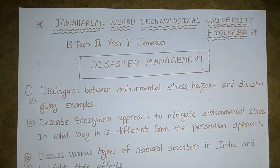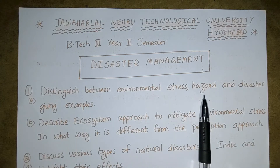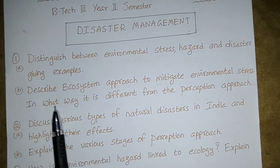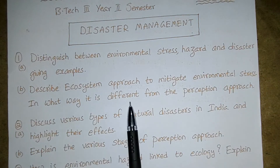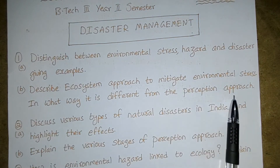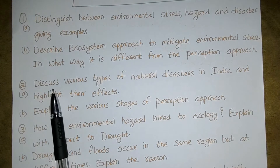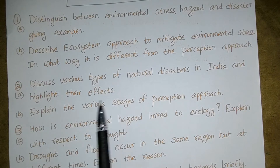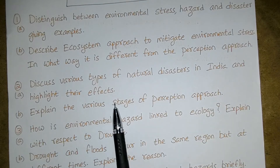First question: Distinguish between environmental stress, hazard, and disaster, giving examples. Second question (a): Describe the ecosystem approach to mitigate environmental stress — in what way is it different from the perception approach? Second question (b): Discuss various types of natural disasters in India and highlight their effects. Explain the various stages of the perception approach.